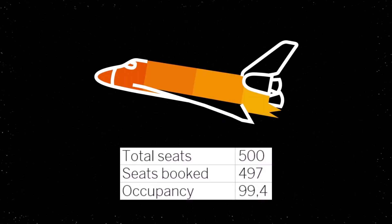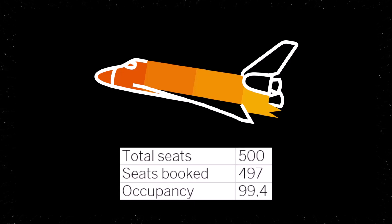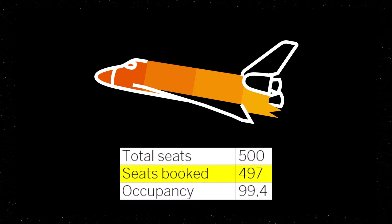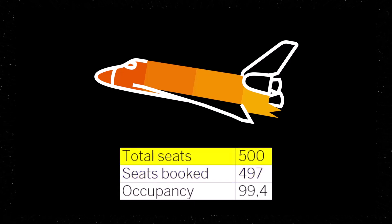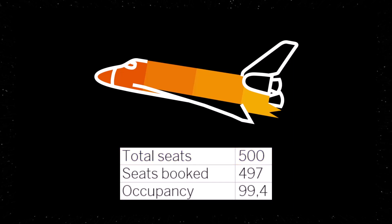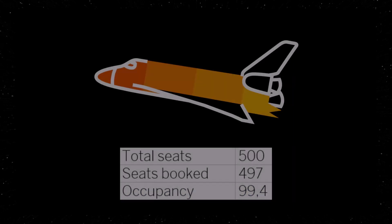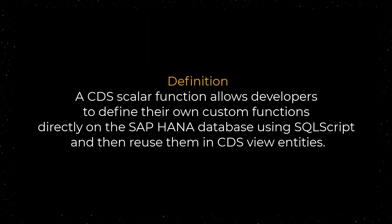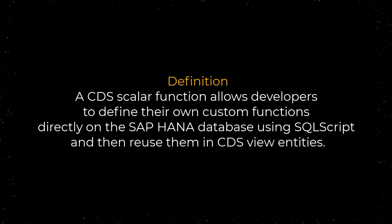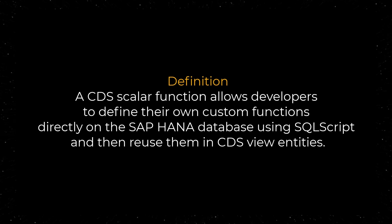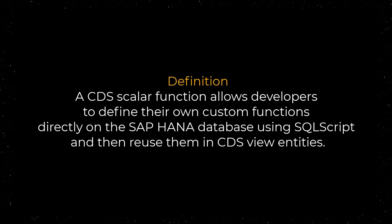Here's the scenario we will address. We know the number of seats booked and the total number of seats available on a flight. We want to calculate the occupancy of the flight using a CDS Scalar function. A CDS Scalar function allows developers to define their own custom functions directly on the SAP HANA database using SQL script, and then reuse them in CDS View entities.